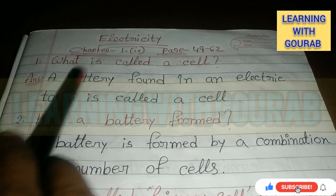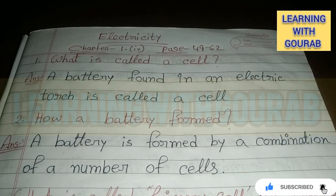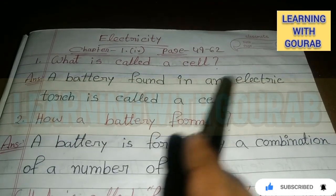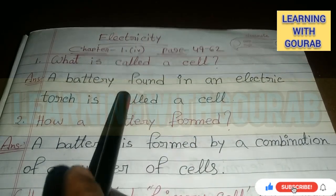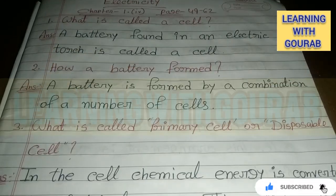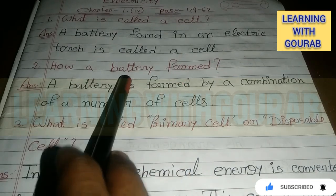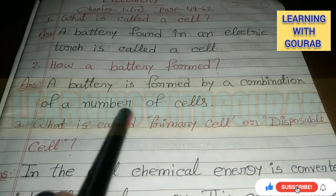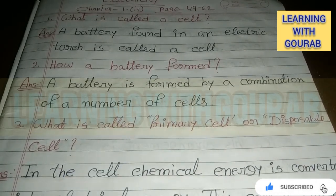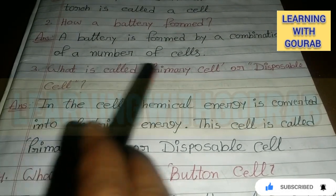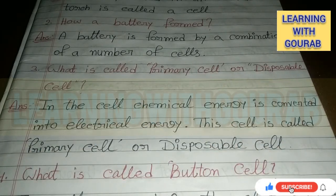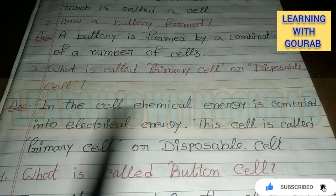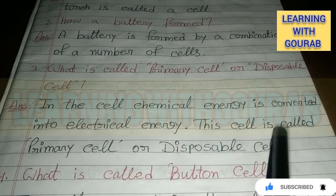First question: What is called a cell? Answer: A battery found in an electric torch is called a cell. A battery is formed by a combination of a number of cells. What is called a primary cell or disposal cell? Answer: In this cell, chemical energy is converted into electrical energy. This cell is called a primary cell or disposal cell.